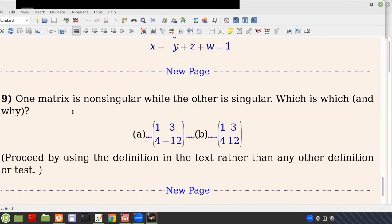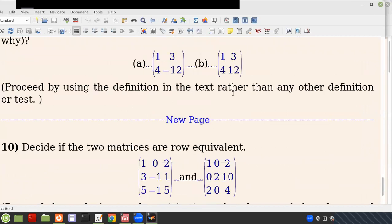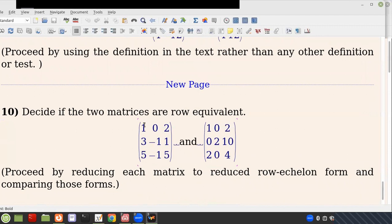Here's two matrices. Which matrix is non-singular? One matrix is non-singular, but the other is singular. Which is which? And then use the definition of text. Decide if these two matrices are row equivalent.